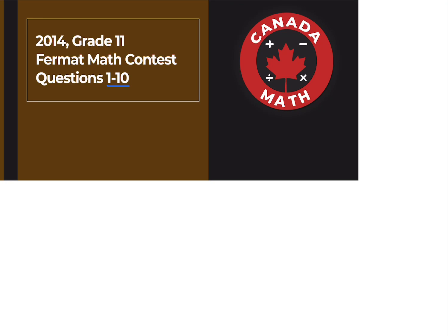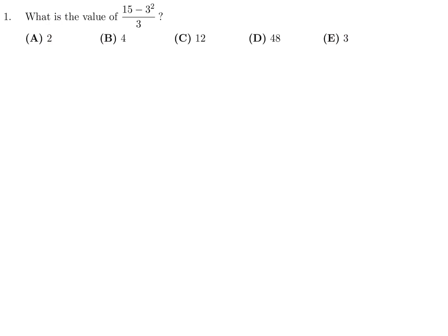Questions 1 through 10 on the 2014 Grade 11 Fermat Math Contest. Question 1: What is the value of 15 minus 3 squared, over 3? 15 minus 3 squared — that is 9. 15 minus 9 is 6, and 6 divided by 3 is 2. So number 1, the answer is B.